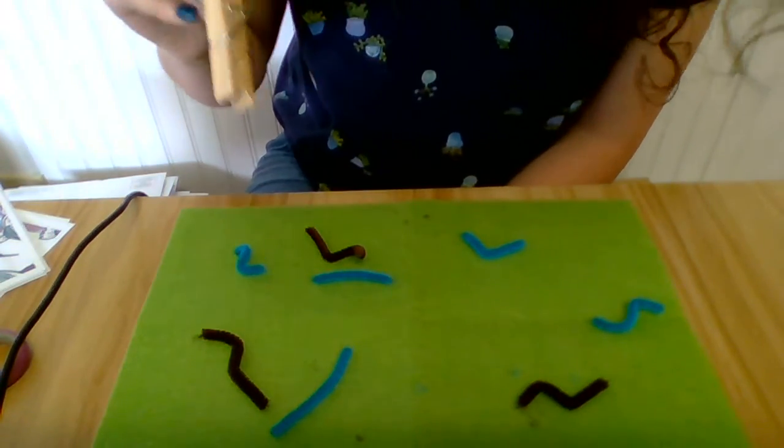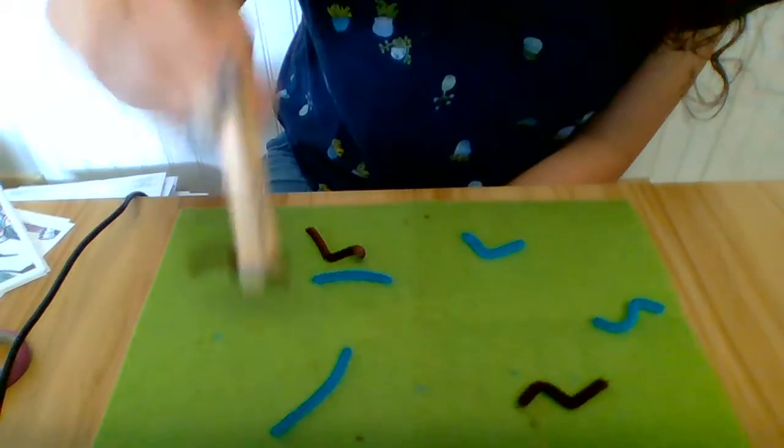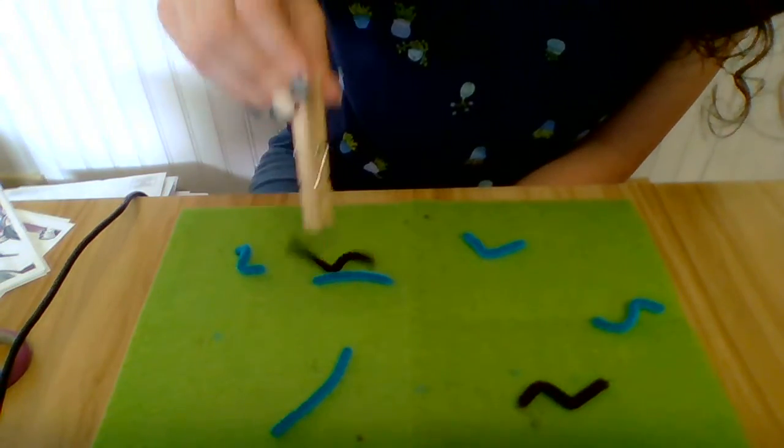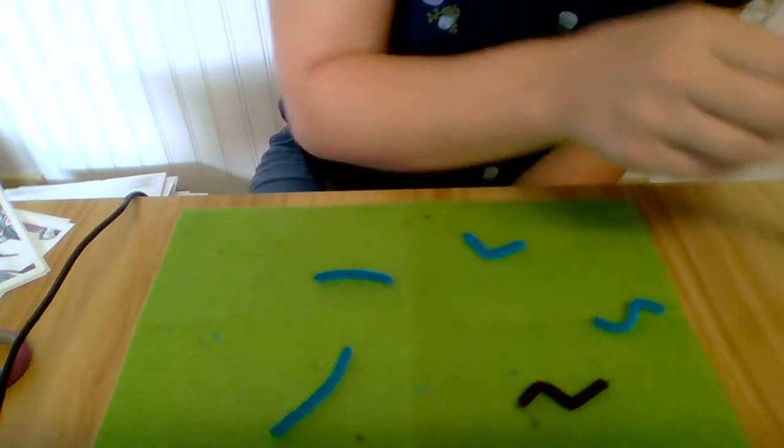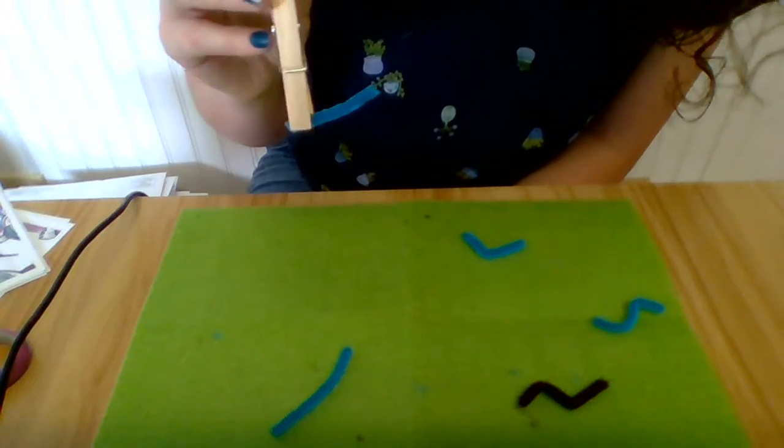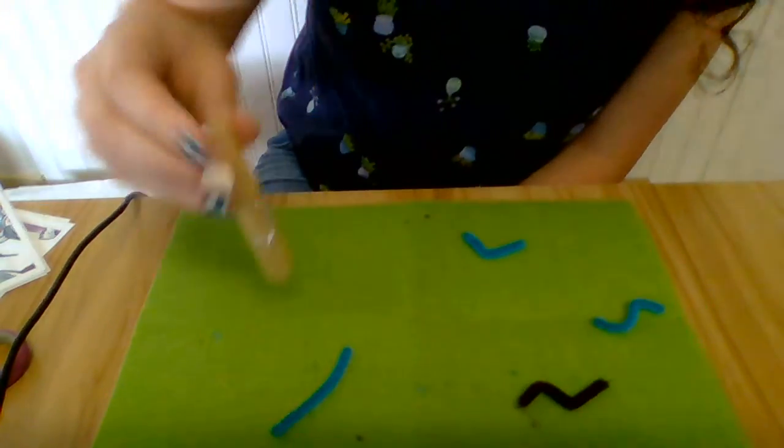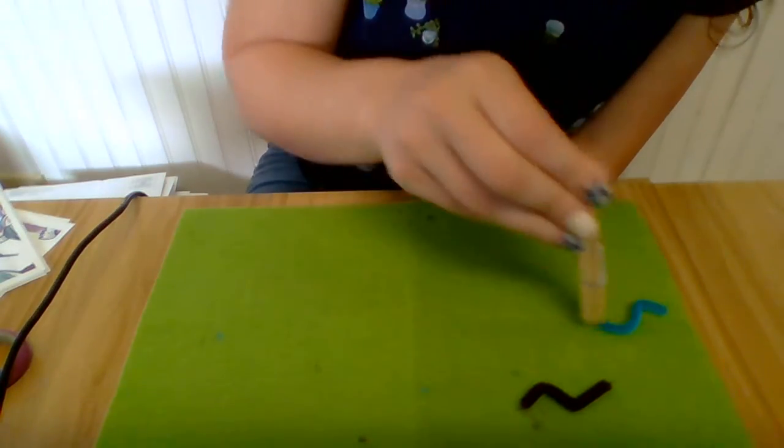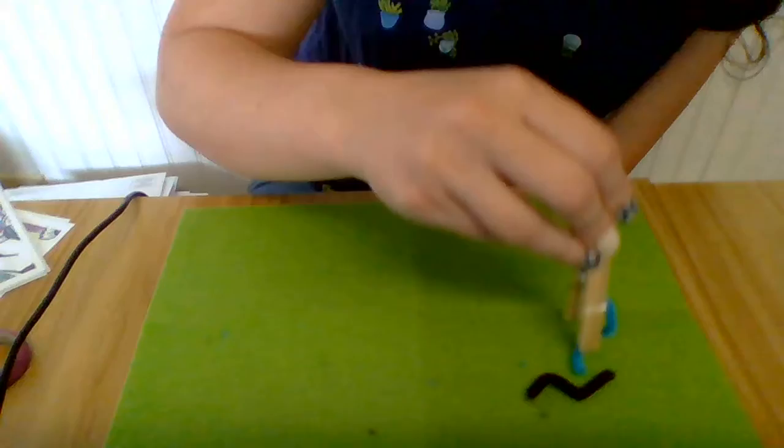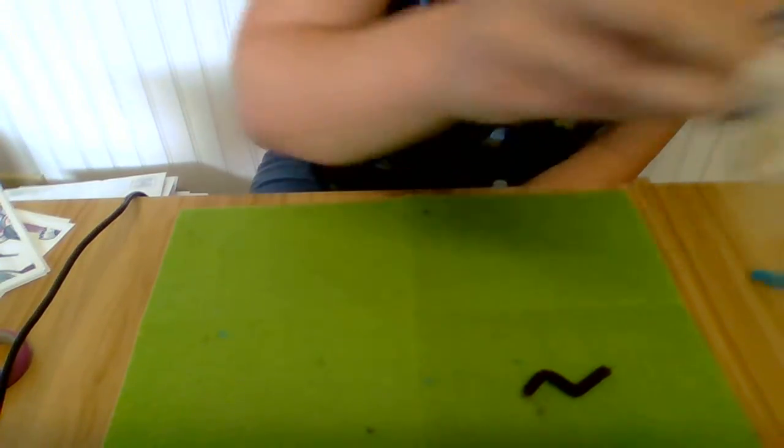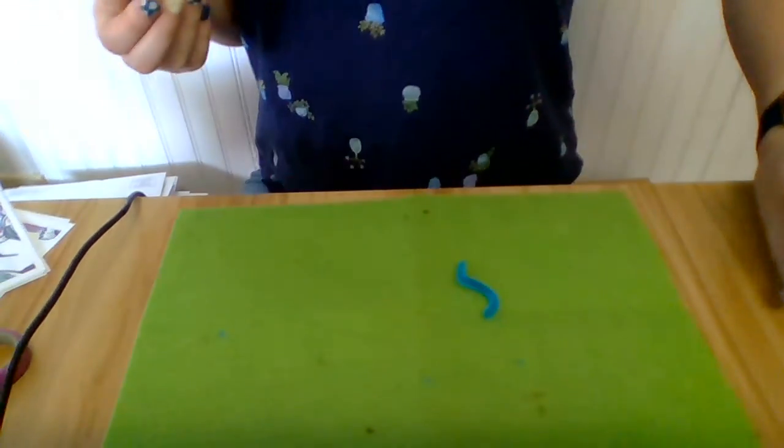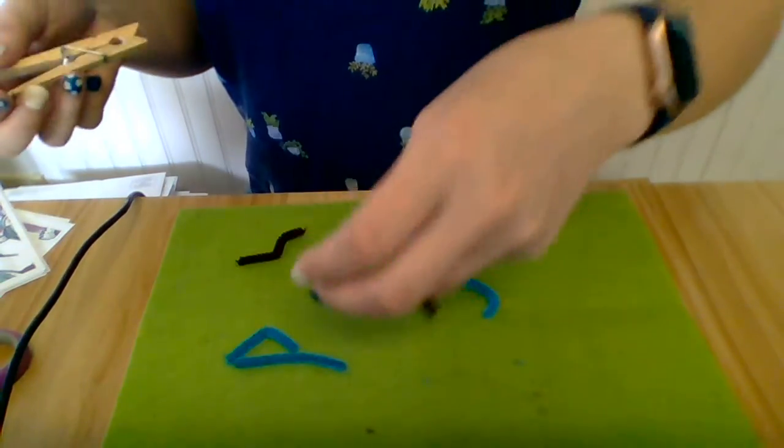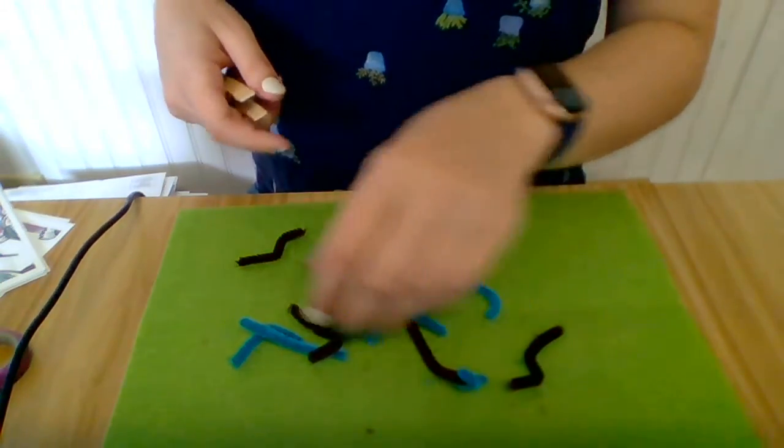So keep pretending that we're birds. We're really hungry with our beak, and we're going to keep trying to find these worms. If you want to, you can ask a guardian to look at the clock and see how fast you can do this. How many worms can you catch really fast? Sometimes it's hard to pick these up. So maybe see how fast you can catch all of these different worms, or you can hide them and see how fast you can find and hunt for worms.